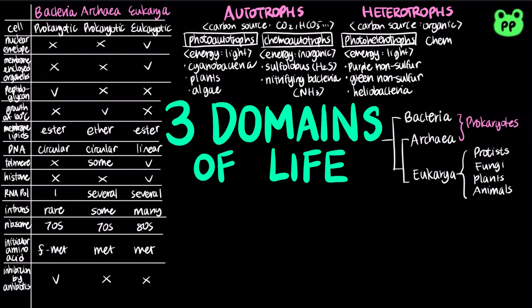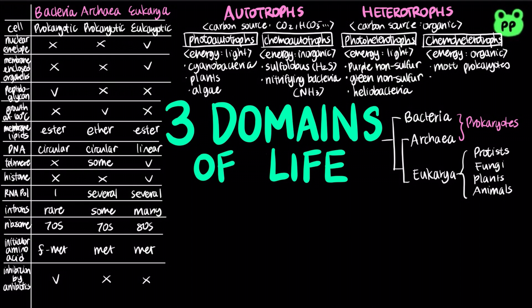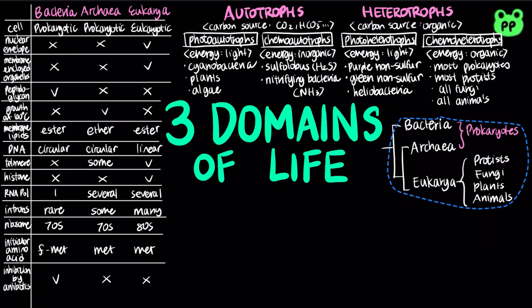Lastly, most organisms are chemoheterotrophs, which require organic compounds for both carbon and energy source. Chemoheterotrophs include most prokaryotes, most protists, all fungi, all animals, and some plants.